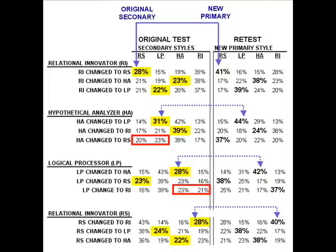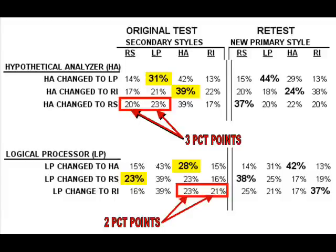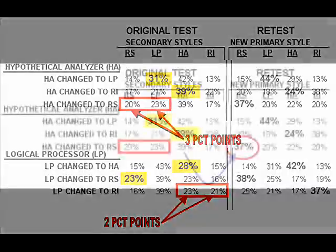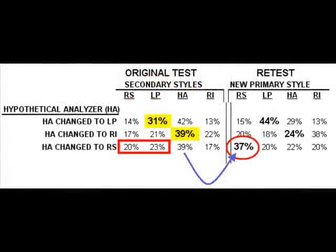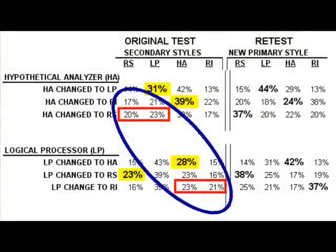But what about those two cases where the secondary style did not rise to primary status? This is a blow-up of the boxed areas in the prior graphic. Notice that the secondary strategy did not differ much from the one that evolved into the primary style on retest. In this case, the studied and cautious HA changed into the spontaneous risk-taking RS — the RS already occupied 20% of the profile in the original test, which is not that far from the 23% of the original secondary style. Exactly the same thing happened in the other boxed case.